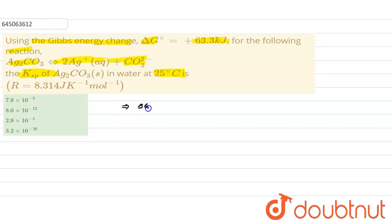Delta G° is given as +63.3 kilojoules, or we can write it in joules, that is 63.3 × 10³ joules. Temperature is given as 25°C, which would be 273 + 25 = 298 Kelvin.